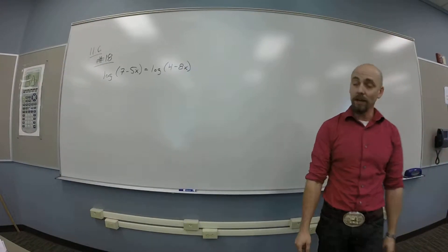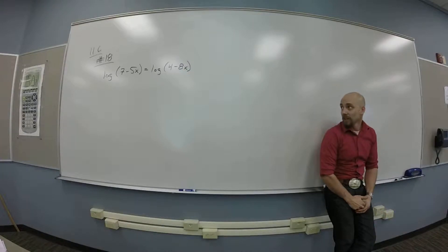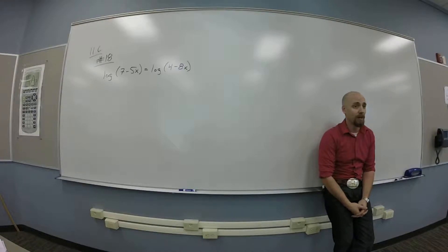So we want to do 11.6 number 18, which says I've got the log of 7 minus 5x and that's supposed to be the log of 4 minus 8x.